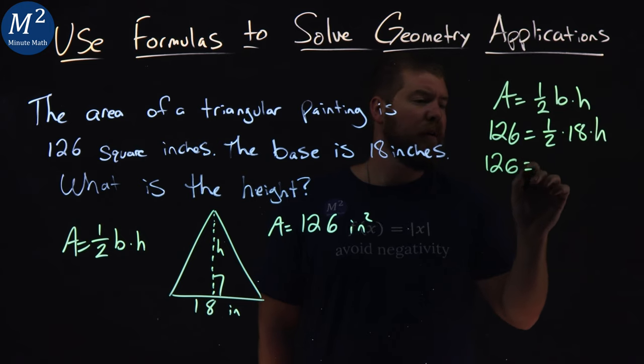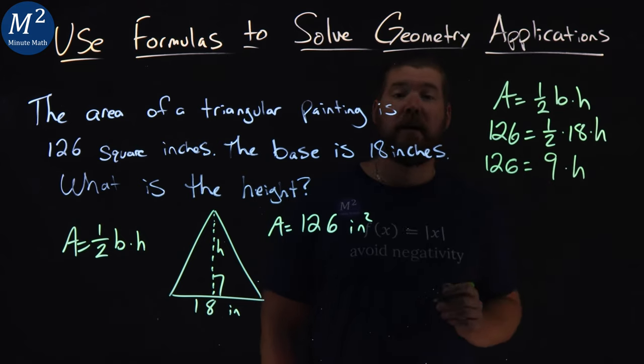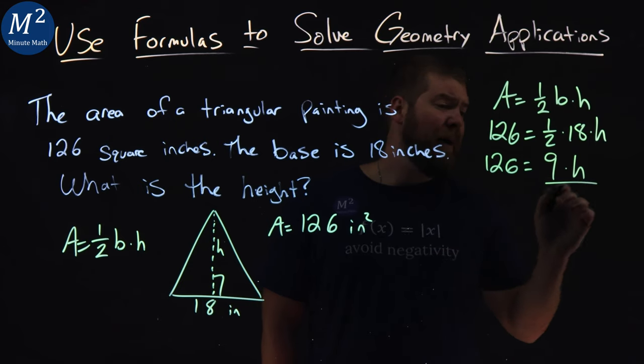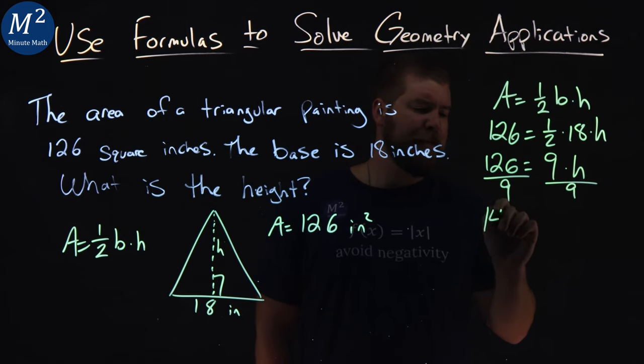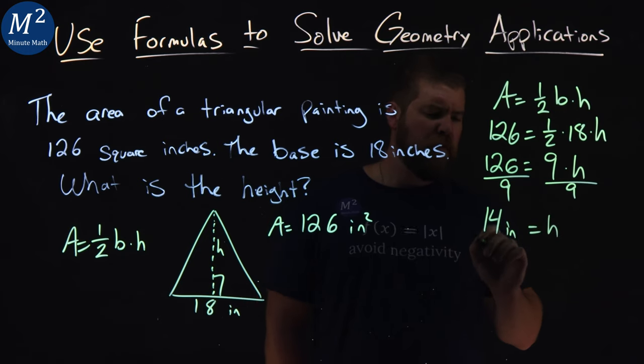126 equals one-half times 18, which is 9, times h. Divide both sides by 9. Opposite of multiplication is division, and 126 divided by 9 is 14. Our units are inches, so our height is 14 inches.